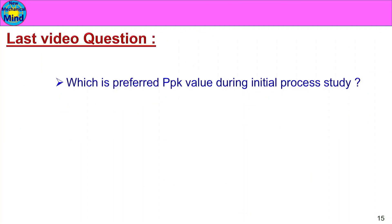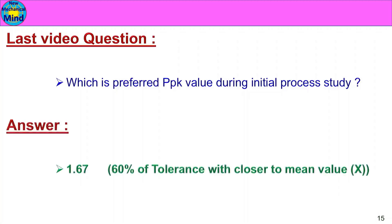Question: Which is the preferred PPK value during Initial Process Study? The answer is 1.67 — that is 60% of Tolerance, closer to the mean value x̄. So the preferred PPK value is 1.67.